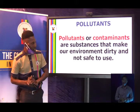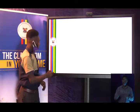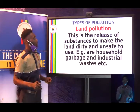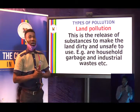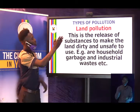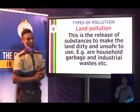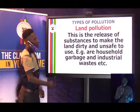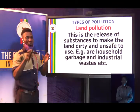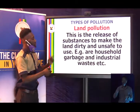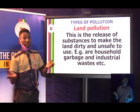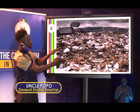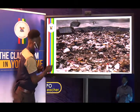Let's check the different types of pollution. The first one is land pollution. What is land pollution? It is the release of substances that make the land dirty and unsafe to use. The pollutants on the land include household garbage — waste from your home that litters the ground — and industrial waste from factories that pollutes the land. You can see this in the diagram here.